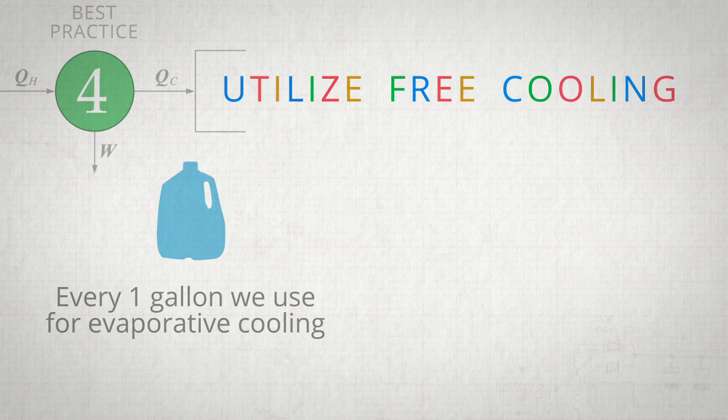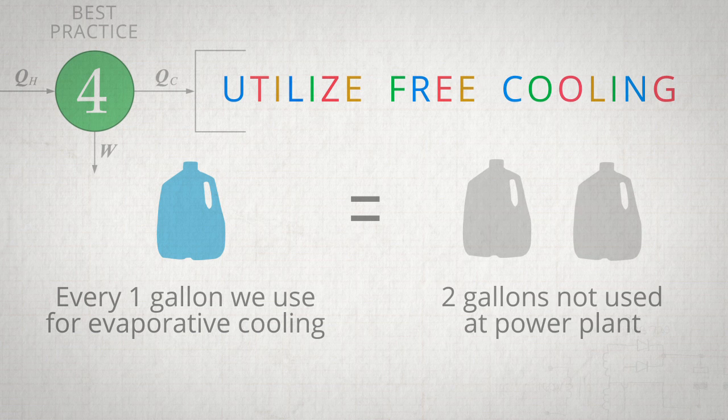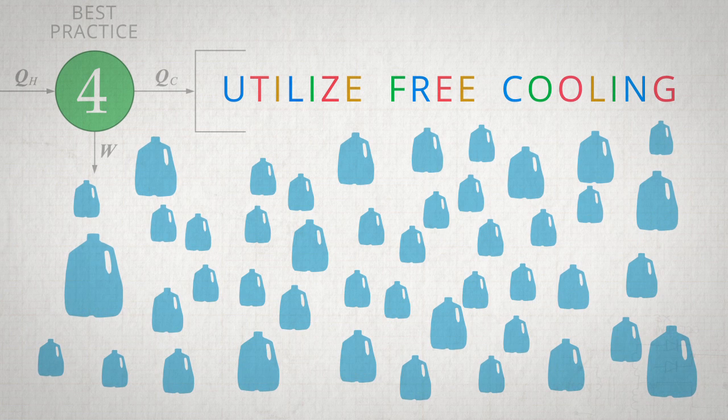Evaporative cooling uses water on site. But what we found through our studies is that by using evaporative cooling in a very efficient fashion, we save water on the whole. For every gallon of water we use in the evaporative cooling plants, we eliminate the use of two gallons of water on the energy production side. This translates into hundreds of millions of gallons per year in water savings.